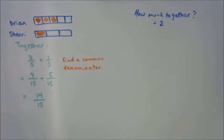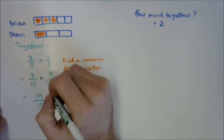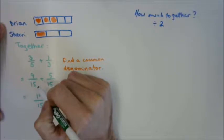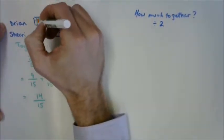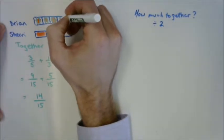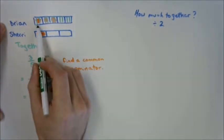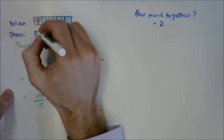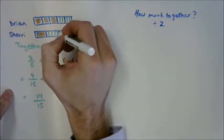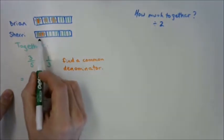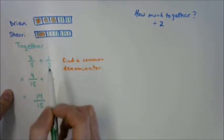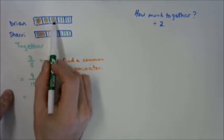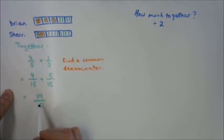Let's go back and think about how we split up our rational numbers. Looking at Brian's chocolate bar, we divided it into fifteenths, which means each piece became thirds, and you can see that you have nine fifteenths. Same thing with Sherry — we needed to get fifteenths, dividing each piece by fifths. You can see that one-third turns into five fifteenths. So now we're sharing fifteenths, and you count all the orange ones — nine plus five is fourteen fifteenths.